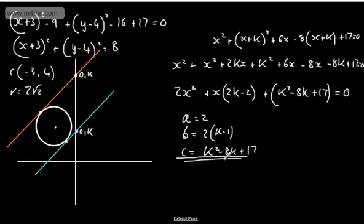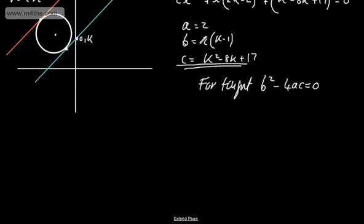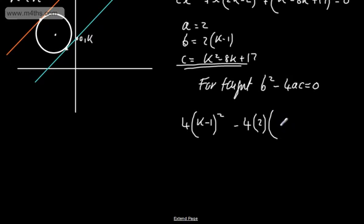For a tangent, b squared minus 4ac equals 0. Squaring b gives 4 times k minus 1 all squared. So we have 4 times k minus 1 squared, minus 4 times 2 times k squared minus 8k plus 17, equals 0.